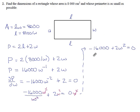Take the 16,000 to the right. 2W squared equals positive 16,000, divided by 2, square root.